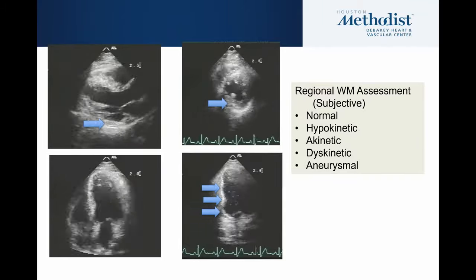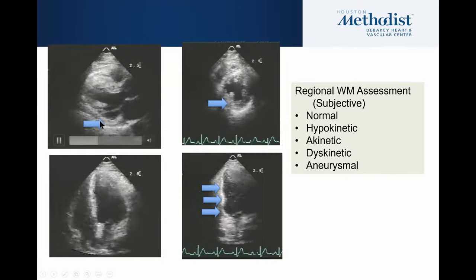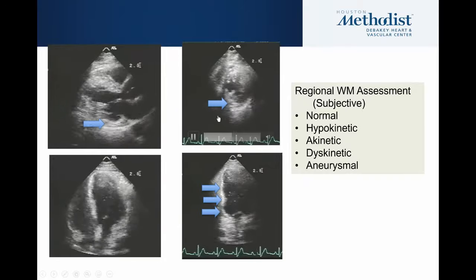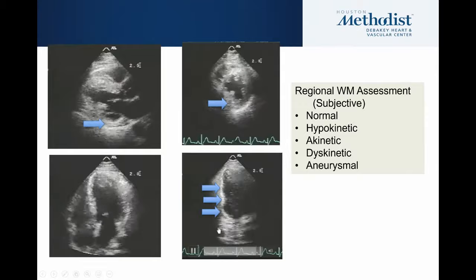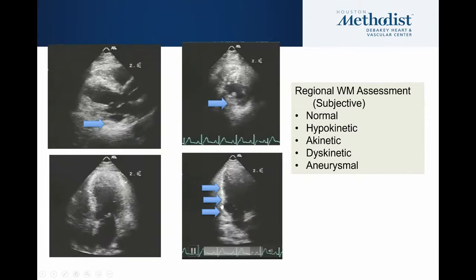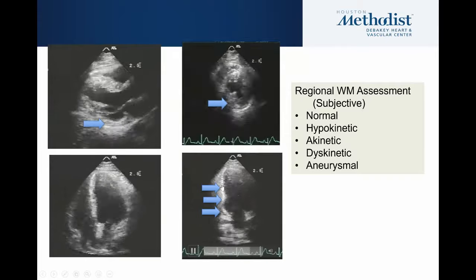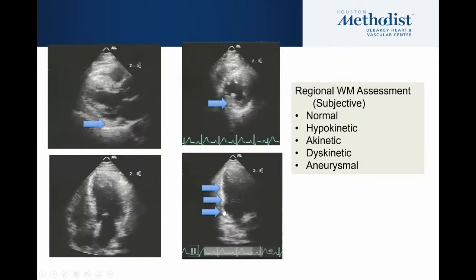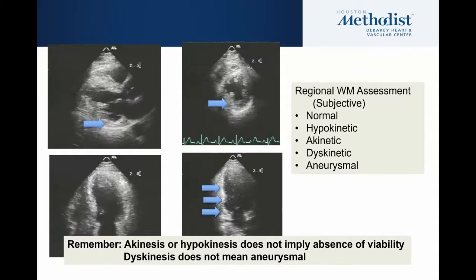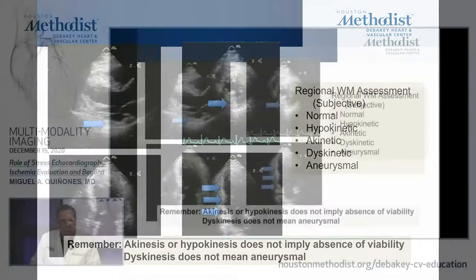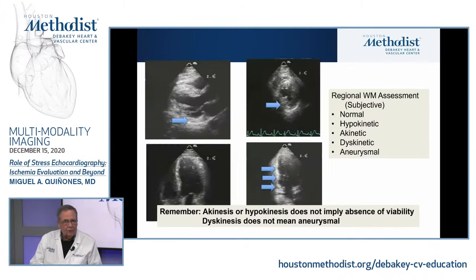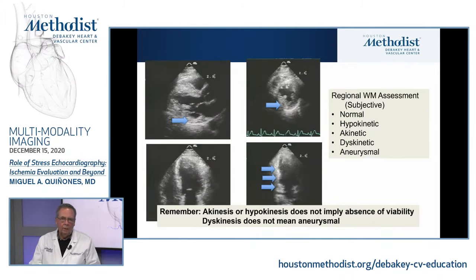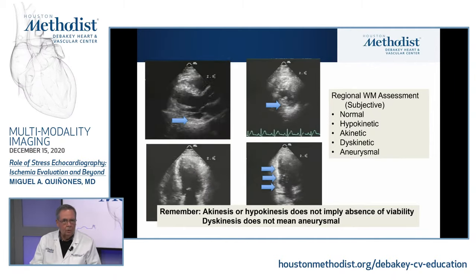In the parasternal long axis view, the inferolateral wall has some hypokinesis compared to a normal septum. More closely to akinesis — no thickening at all — in those segments in the four-chamber view, and in the two-chamber view there's even a little dyskinesis, at least definite akinesis from the base to the mid segment. Two important points: presence of akinesis or hypokinesis does not imply absence of viability, and dyskinesis is not the same as aneurysm — an aneurysm requires geometric distortion in diastole.